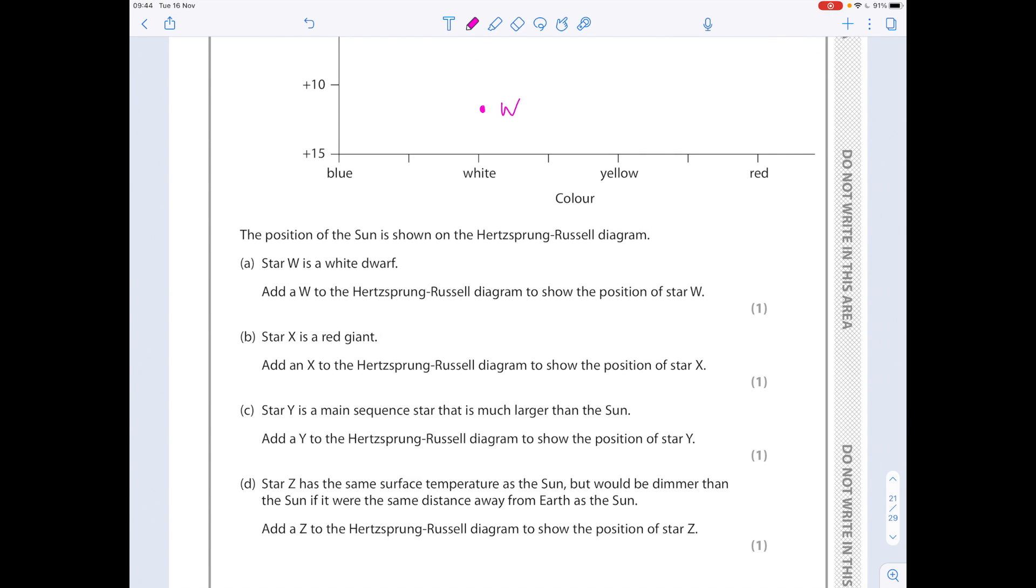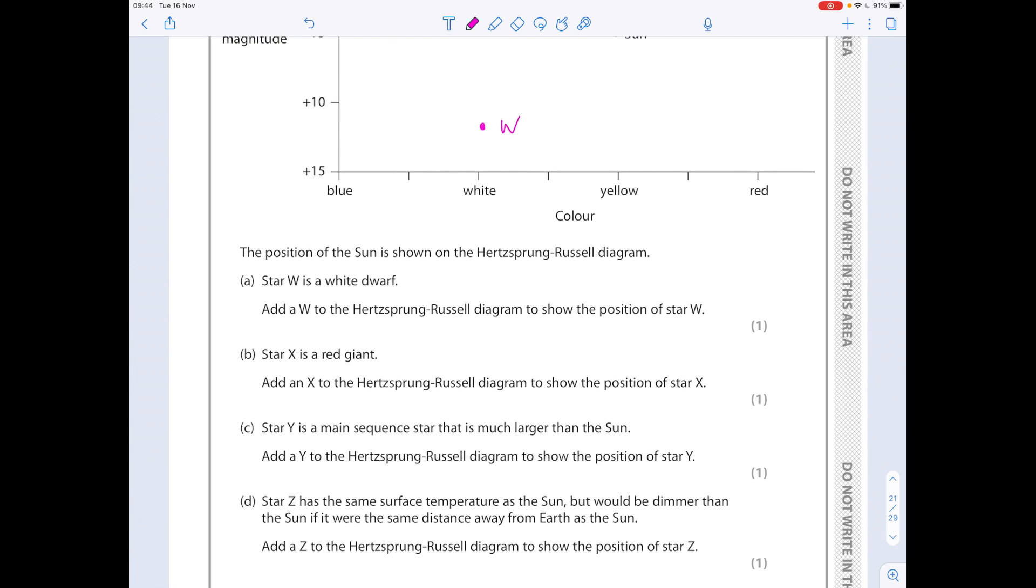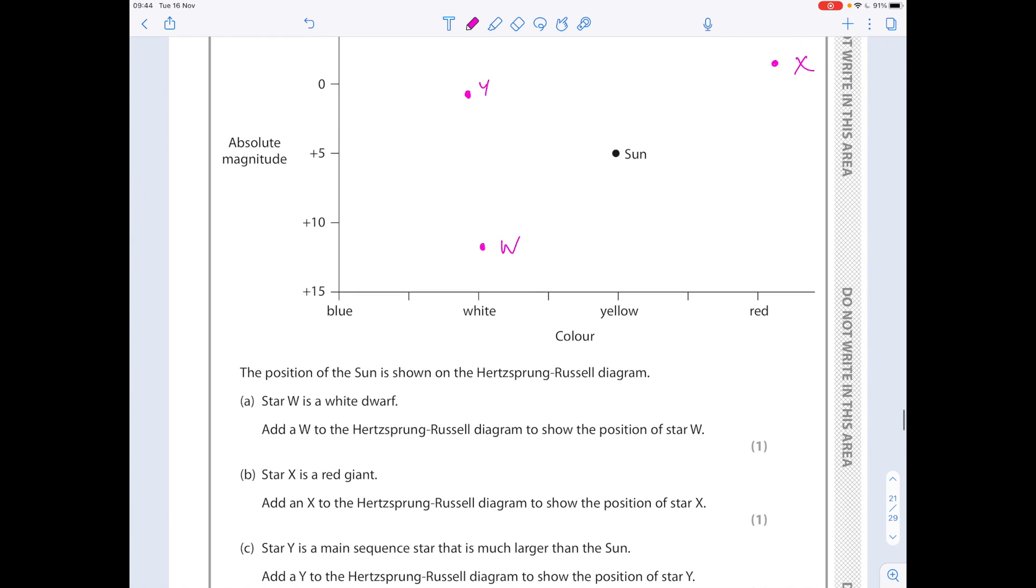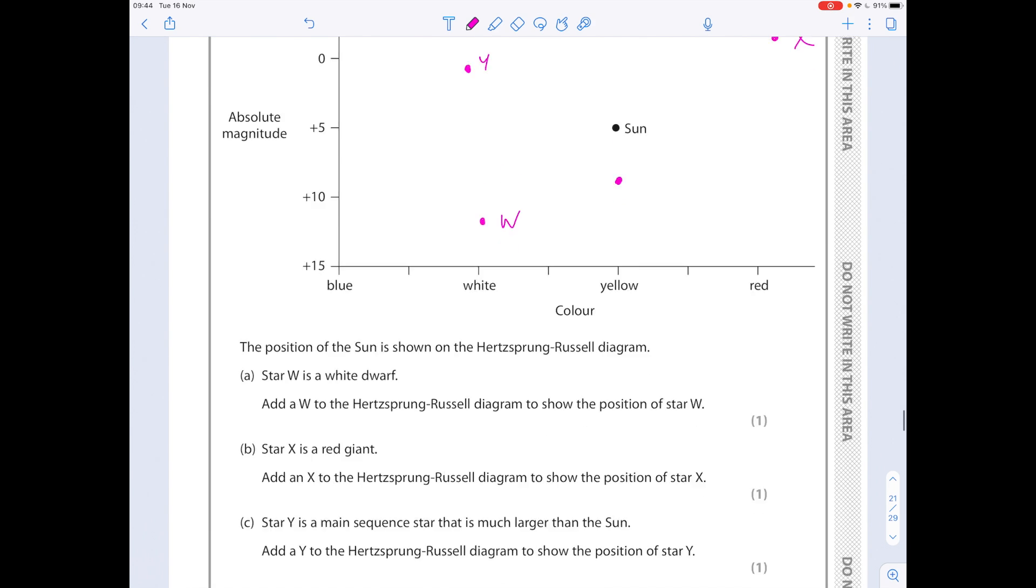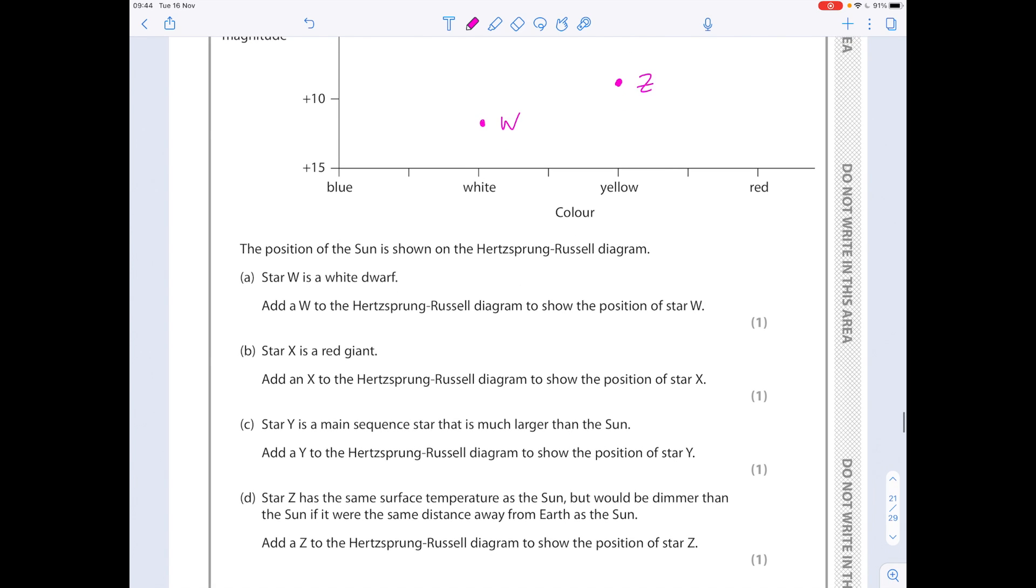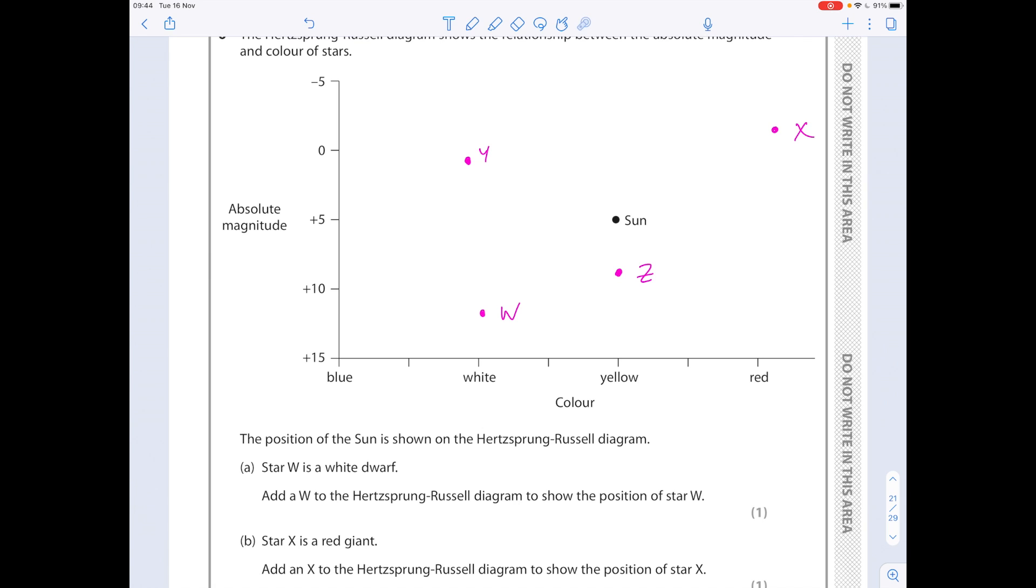Star Z has the same surface temperature as the Sun, but it would be dimmer than the Sun if it was the same distance away from the Earth as the Sun. So yeah, we're referring to this absolute magnitude here. So it's the same temperature, so it'll be the same colour, but it needs to be dimmer. So let's just put it a bit lower. And label that Z. Don't get confused with the axes, by the way. It is brighter up here and it is dimmer down here.